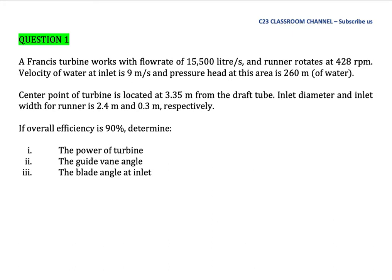Inlet diameter and inlet width of runner is 2.4 meters and 0.3 meters respectively. If overall efficiency is 90%, determine: the power of turbine, the guide vane angle, and the blade angle at inlet.